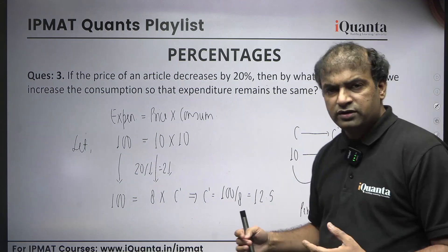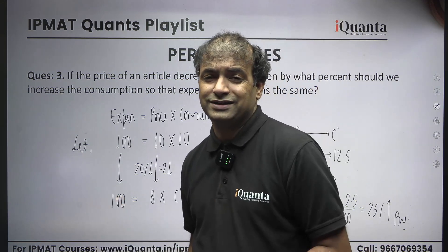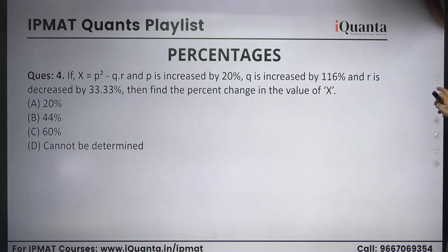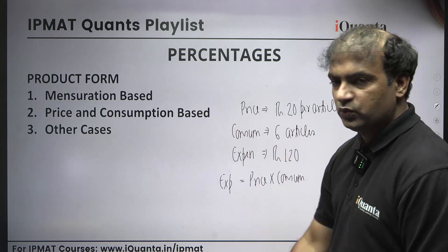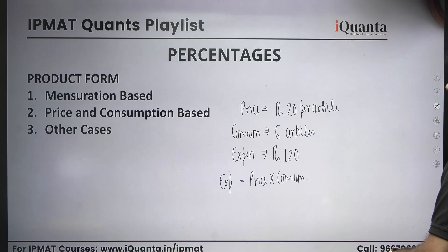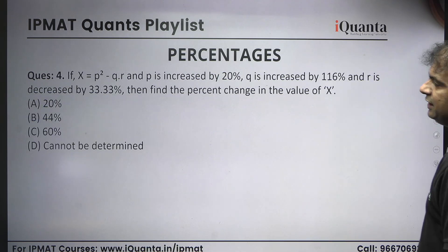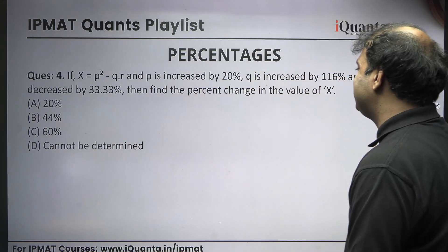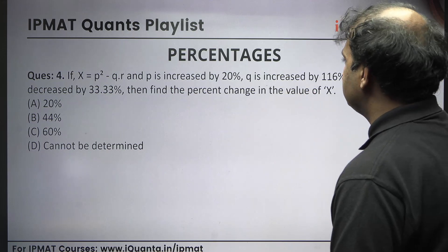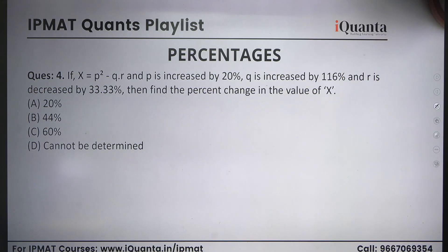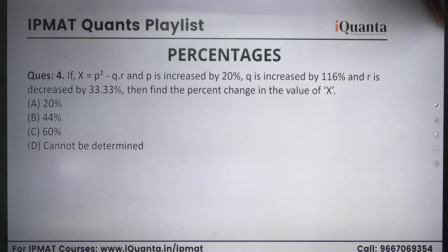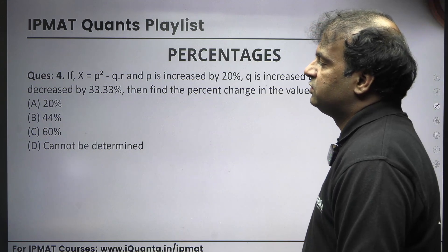There can be more such questions which I'd suggest you practice at home. Now let's try one more problem — the other cases type. The question says: if x = p² − q × r, and p is increased by 20 percent, q is increased by 116 percent, and r is decreased by 33.33 percent, find the percentage change in x.